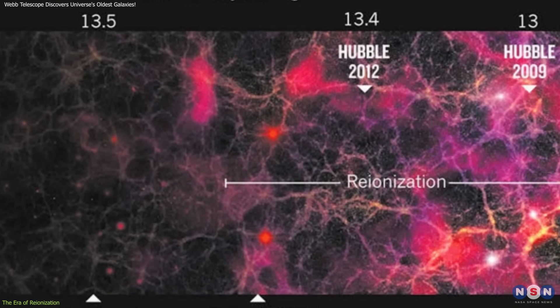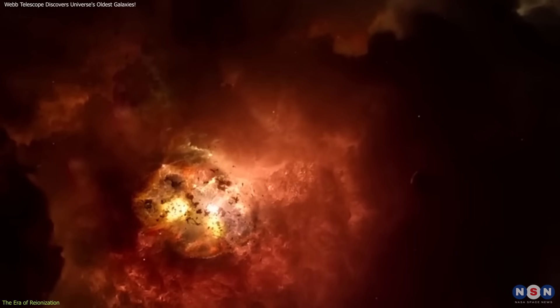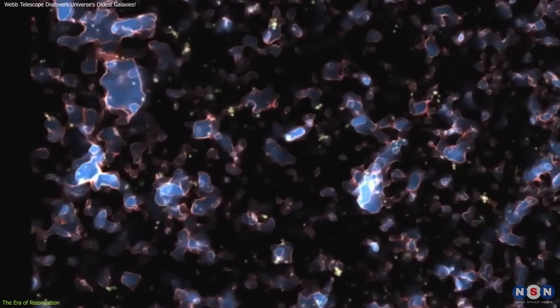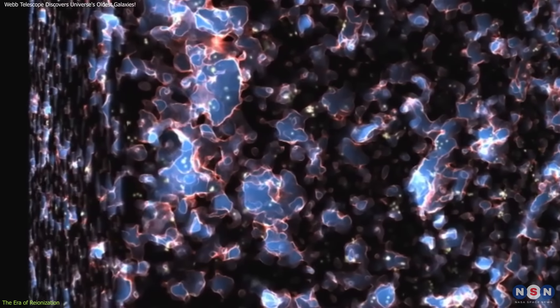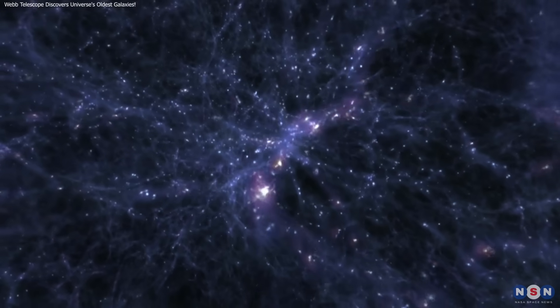Understanding the era of reionization is essential for piecing together the history of the universe. By studying the galaxies from this period, astronomers can learn about the conditions that prevailed during this transformative era, and the processes that led to the ionization of hydrogen gas.